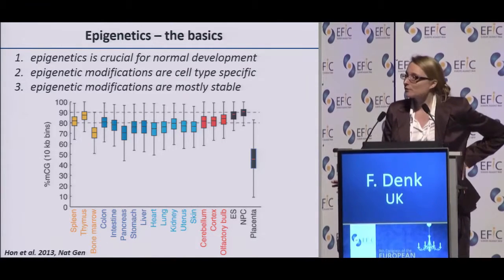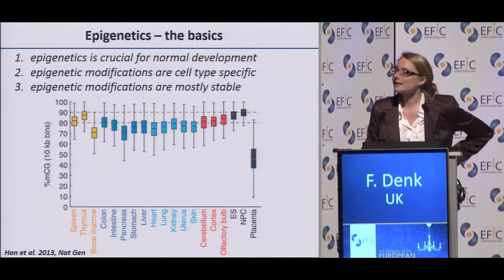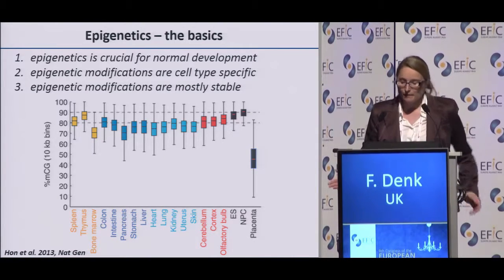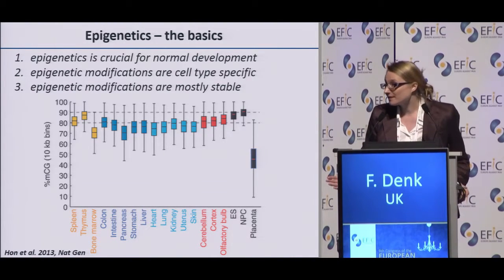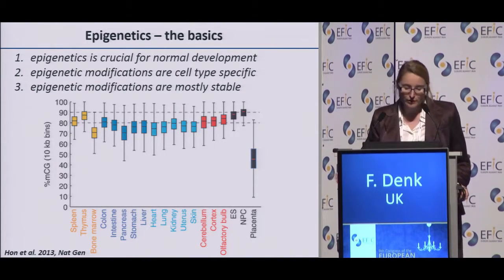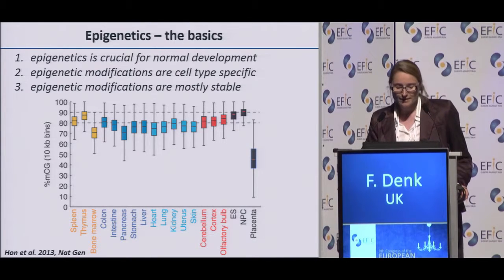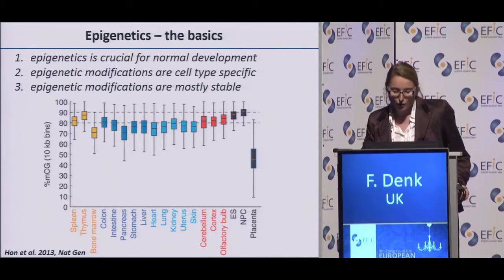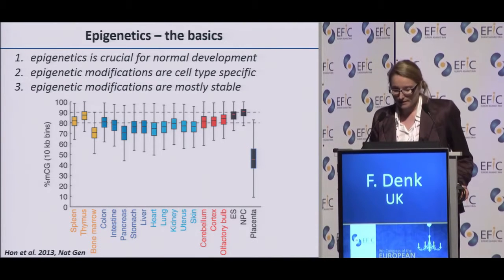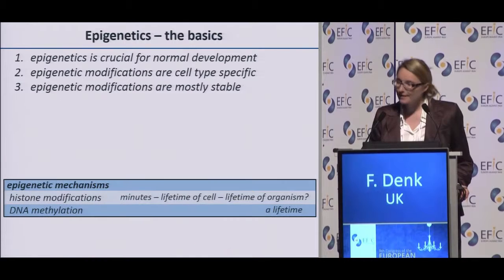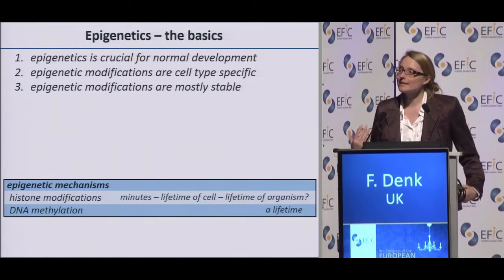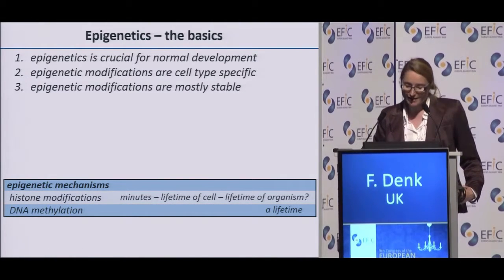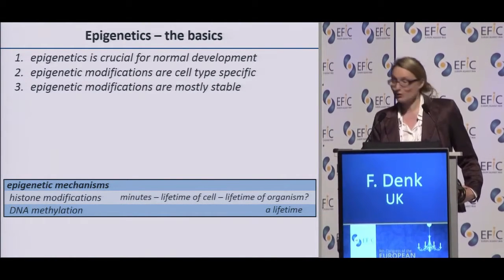Fact number three: epigenetic modifications are stable modifications. Most of our DNA is methylated in most tissues — 70 to 90% of the sequence is methylated across all these different tissues, with the exception of the placenta. Not only that, but the DNA methylation will stay there and it pretty much won't change — the majority of it won't change over the course of your life.